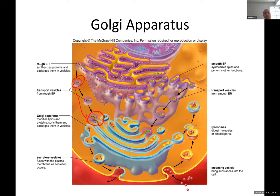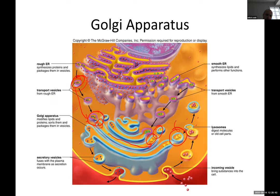Proteins are released into the Golgi flattened sacs where they are rearranged. Look how they enter and then exit on the other side. Once the protein is rearranged it is released into a new vesicle, which either goes outside the cell or stays inside to do its job.